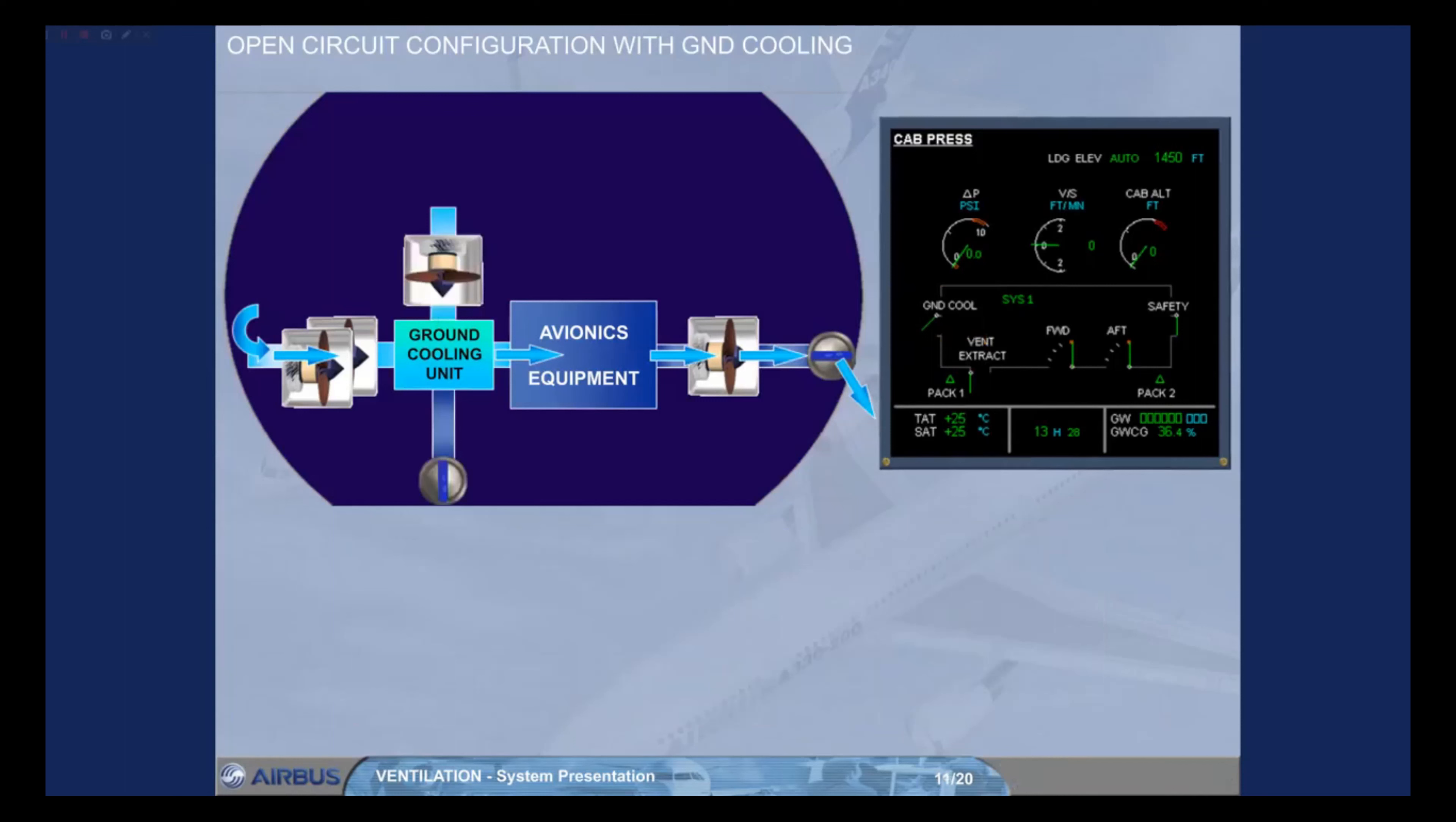The ground cooling unit is cooled using the flowing ambient air. The flow of ambient air is drawn by the ground cool fan and then discharged overboard via the ground cooling valve. On the ECAM cabin press page, the ground cool indication gives the state of the avionics ground cooling system. Normally it remains white.